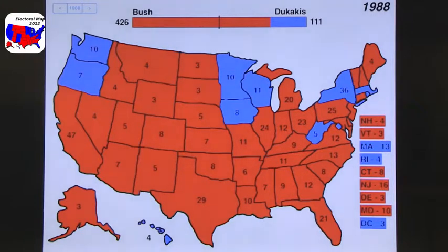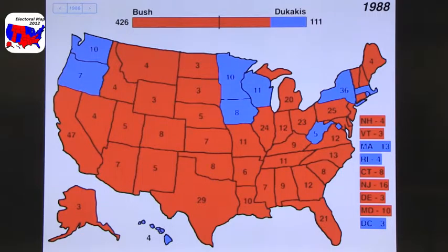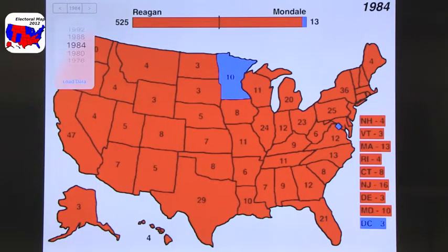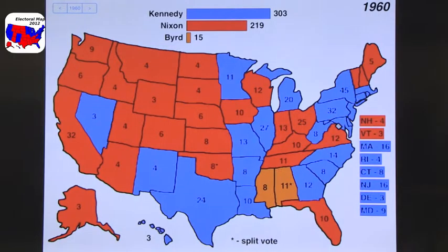The second app I want to talk about is Electoral Map. Electoral Map is really good if you're talking about predictions, but you can actually go back in history. For example, this is the electoral map in the Bush vs. Dukakis 1988 election. This is the Reagan sweep — the Reagan-Mondale election. You can also go to different years, just slide through, go to the 1960 election, and look through different time points to see what has happened.